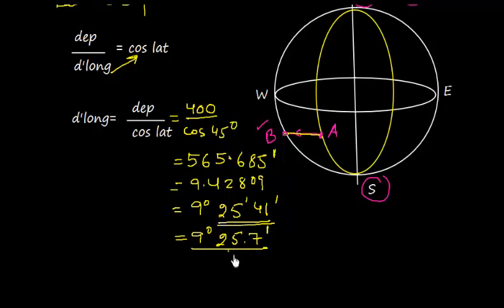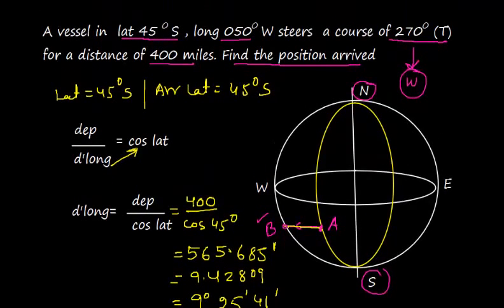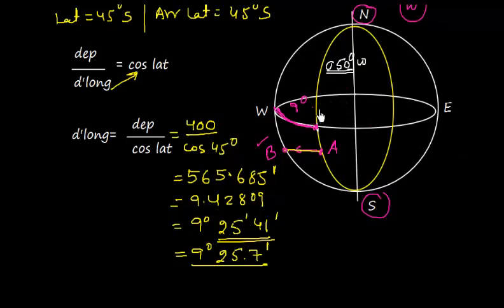So here, if we see, my longitude here was 050 degrees west. This is the longitude. This part is the longitude part. And I move further here towards west by how much amount? By 9 degrees and 25.7. By this amount I moved from A to B towards west.